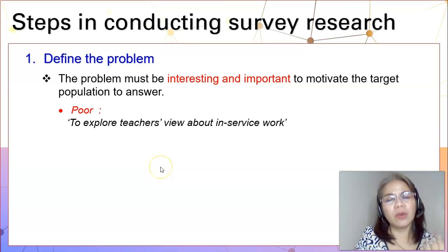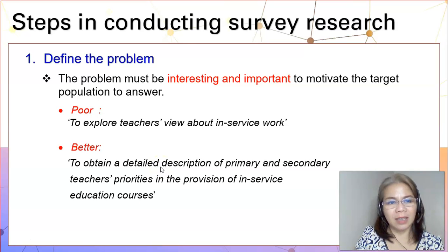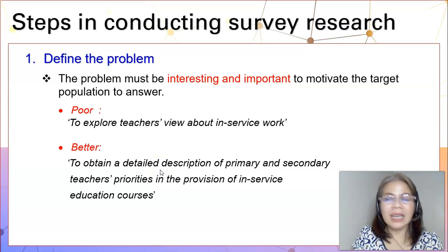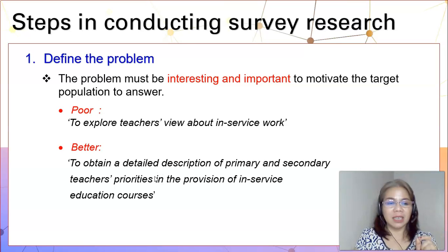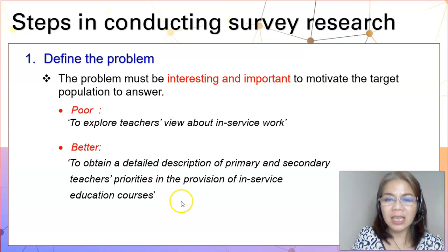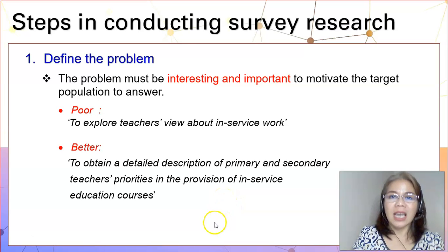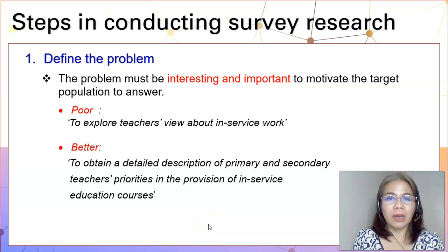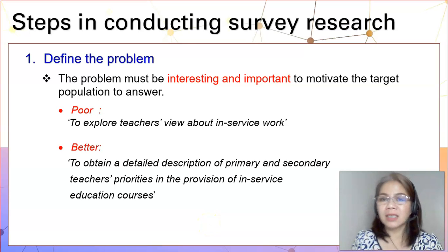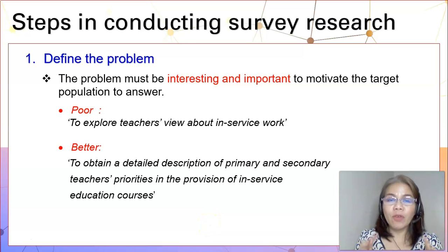How do we correct that? Perhaps you want to say: to obtain a detailed description of primary and secondary teacher's priorities in the provision of in-service education courses. In this way, you are telling your respondents what are the details of your research endeavor.